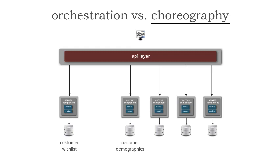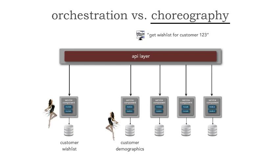What I'd like to do is apply that now to architectural concepts. Let's take a look at choreography first. We have a customer wishlist service with its own data — a microservice. And we have a customer demographics service, which is a separately deployed unit of software also with its own data. The customer demographics has the name, address, and profile information about the customer. The customer wishlist microservice is a separately deployed unit of software that manages the wishlist for the customer. And we have a request: get the wishlist for customer number 1-2-3.